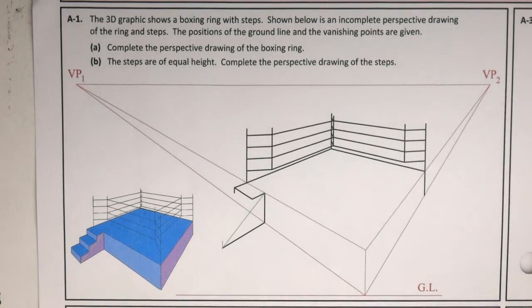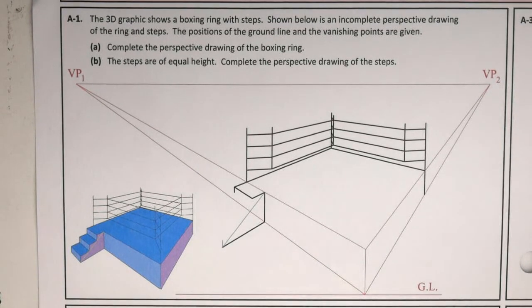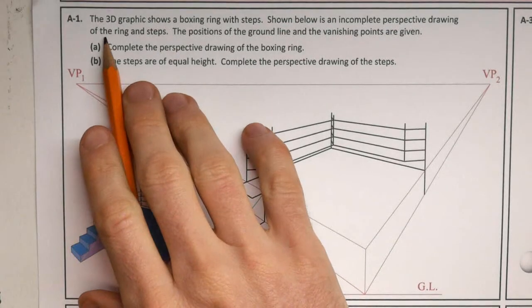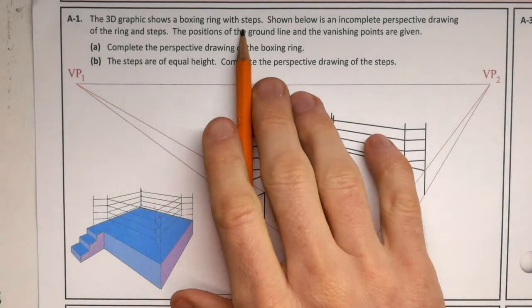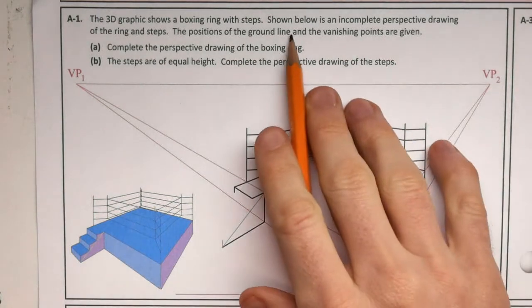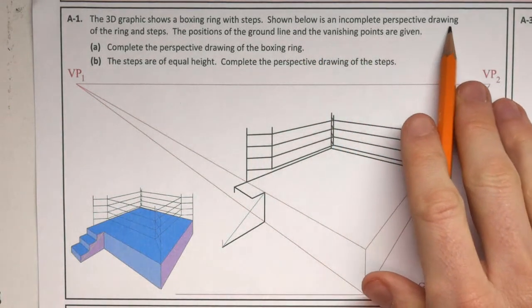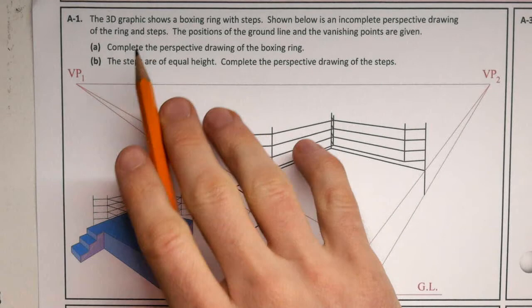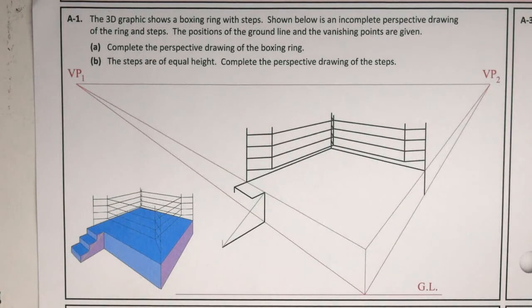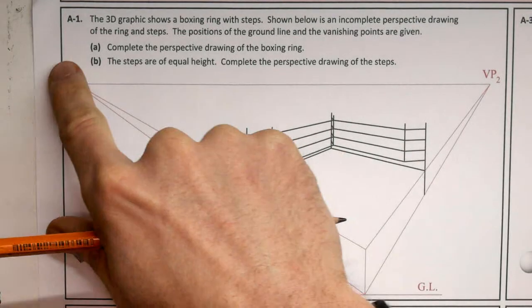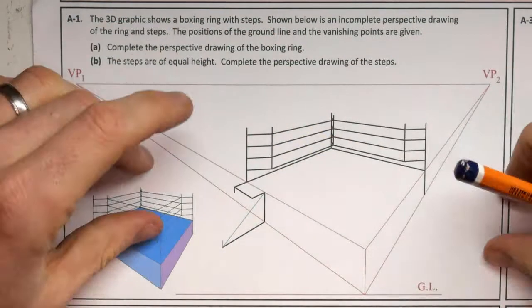Welcome to 2021 question A1. This is a perspective question. The 3D graphic shows a boxing ring with steps. Shown below is an incomplete perspective drawing of the ring and the steps. The positions of the ground line and the vanishing points are given. So ground line here, VP1 and VP2. We're looking at the entire picture panel.